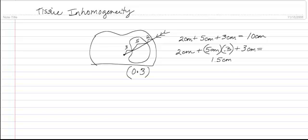So the radiation doesn't see 5 centimeters of tissue, it only sees 1.5 centimeters of tissue. So the effective depth is actually 6.5 centimeters.